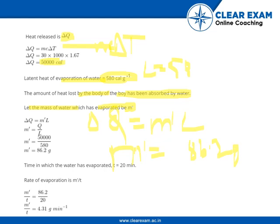The time taken is 20 minutes. Therefore, the rate of evaporation is 86.2 divided by 20 minutes, which equals 4.31 grams per minute.